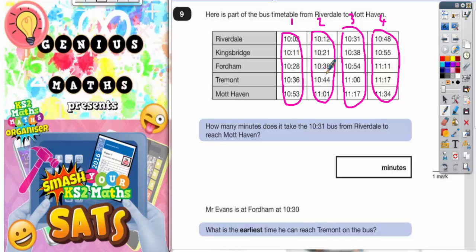Because if you're on bus number 2 at 10:38 in Fordham, how can that same bus then go back in time to Riverdale at 10:31? It doesn't make sense.